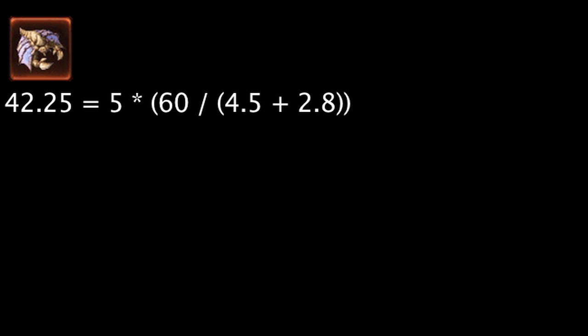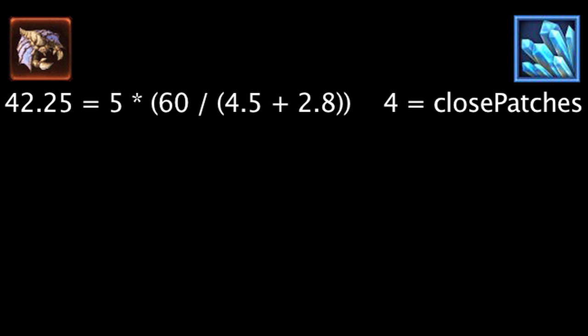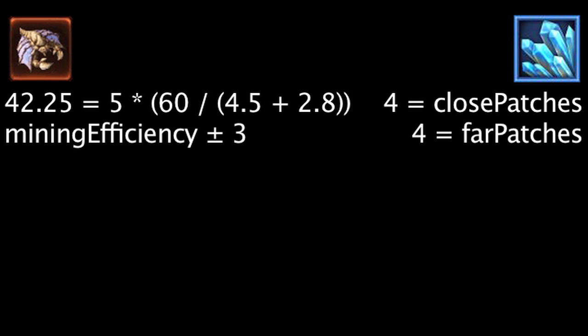However, the distance to mineral patches frequently varies. Of the 8 patches, 4 are considered close patches and 4 are considered far patches. This means the mining efficiency changes by roughly plus or minus 3 minerals per minute between close and far patches, creating a rough range of 32.25 and 45.25 minerals per minute.